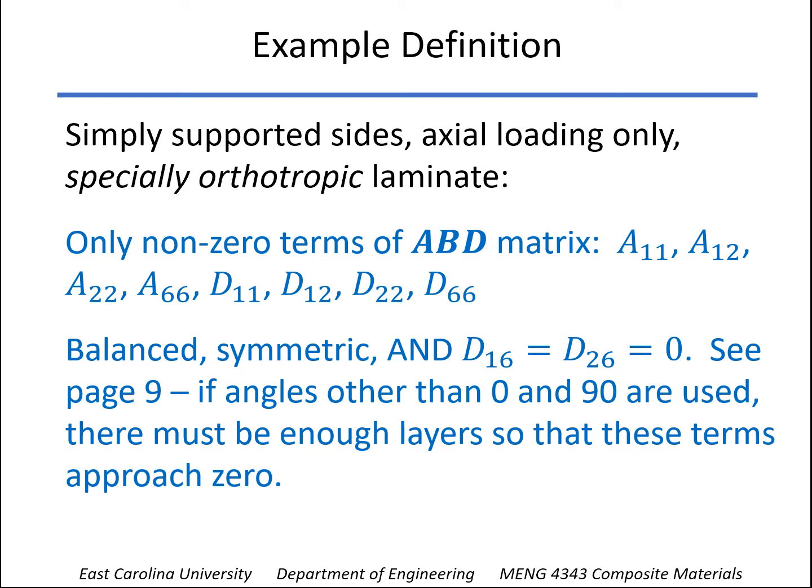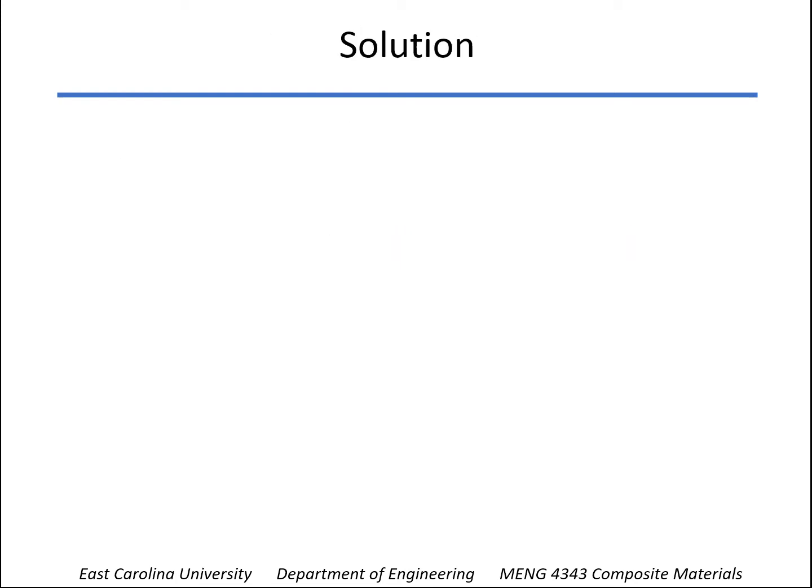But if you have only zeros and nineties, then as long as you're symmetric, that would qualify as a specially orthotropic laminate. We're going to keep it real simple. We're going to have all our fibers in just the axial direction.